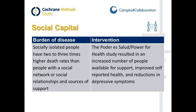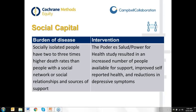For social capital, socially isolated people have higher rates of death than people with a social network. The Power for Health study found a reduction in depressive symptoms by providing increased social support for people. Social capital is the last S in PROGRESS, as shown on the slide.